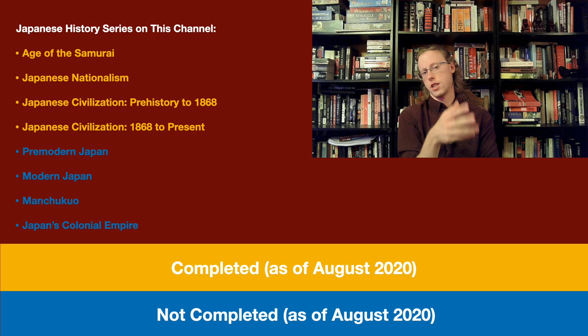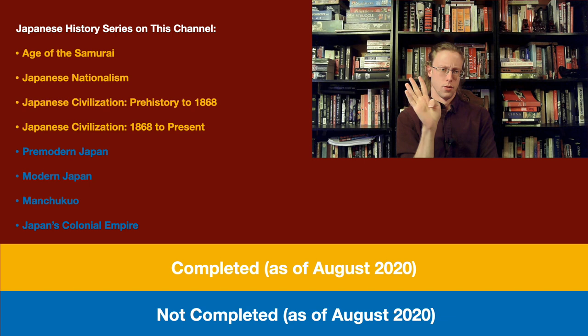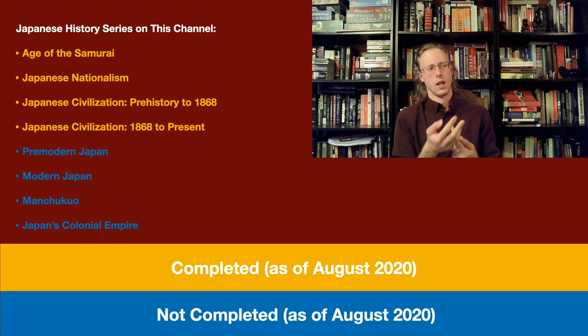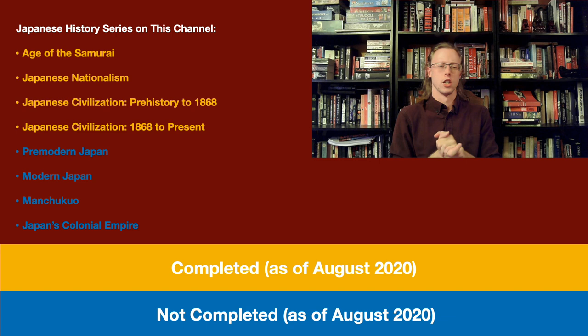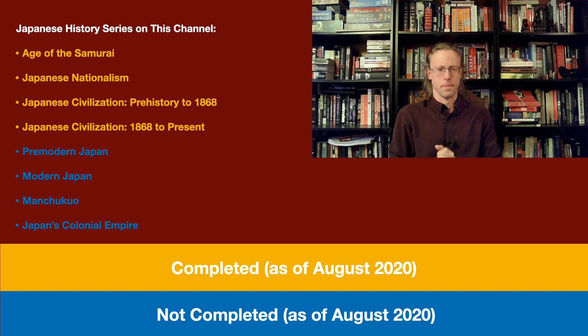Okay, everybody. As you can see on the screen, I have eight series that the channel is going to be doing on Japanese history. As of right now, and I'm saying this in about the middle of August 2020, we have four complete series that are recorded and edited. Because I'm a workaholic with YouTube, this is going on well before I will actually upload and release all these series. The Age of the Samurai and Japanese Nationalism I have already started — they are now complete and will be uploaded over the coming weeks.